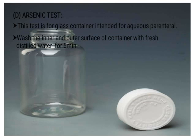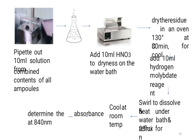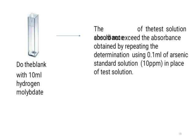The arsenic test is for formulations where the drug or dosage form comes directly into contact with the packaging material or container. We pipette out the solution, add nitric acid, keep it in an oven, add ammonium molybdate reagent, swirl to dissolve, and keep it in a water bath. Then we cool it and check the absorbance at 840 nanometers. We also take a blank reading using only the molybdate reagent without the sample, and the difference between blank and sample readings gives the actual arsenic reading.